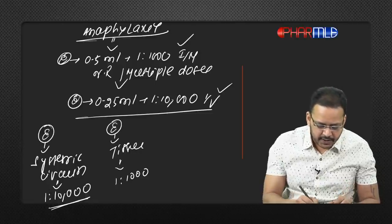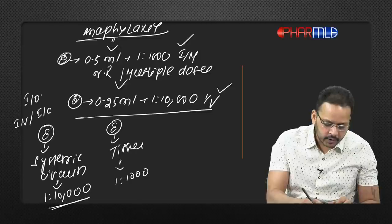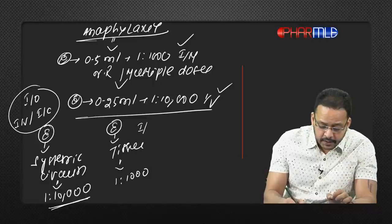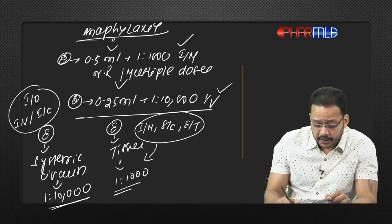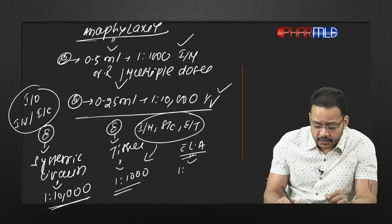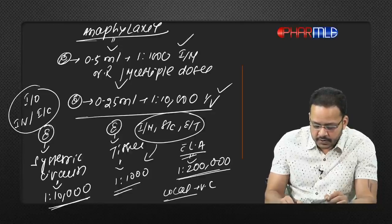Dilution in various scenarios: intravenous, intracardiac, and intraosseous — use 1:10,000. Intramuscular, subcutaneous, and endotracheal — use 1:1,000. Along with local anesthetics, use 1:200,000. For local vasoconstriction, use 1:100,000.